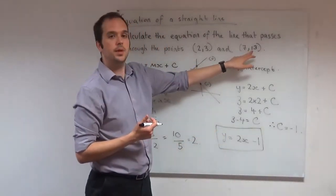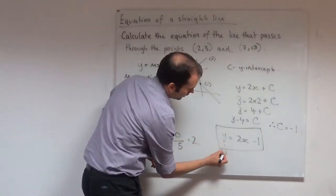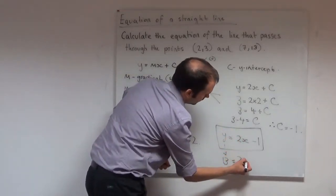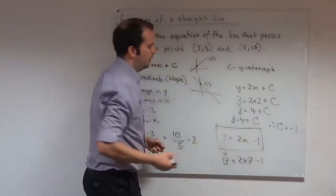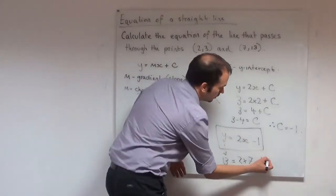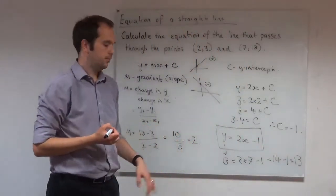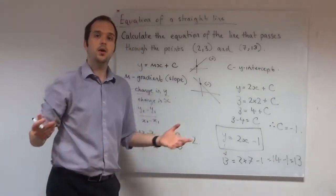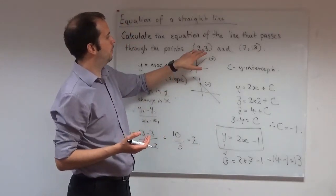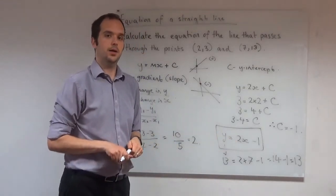I know y equals 13 when x is equal to 7. Let's put that in. y is 13, x is equal to 7, and then we have minus 1. Well, let's have a look at this right-hand side. I have 2 times 7 is 14, and then minus 1 is equal to 13, which is exactly what I had here. So I know my answer is correct. So I can be confident that the equation of the straight line that passes through (2,3) and (7,13) is given by y is equal to 2x minus 1.